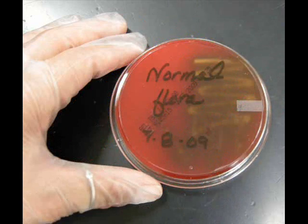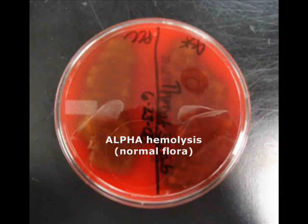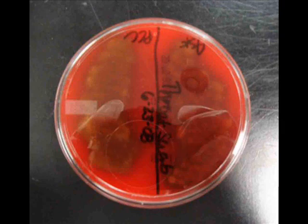Now here's a different blood agar plate that has bacterial growth, and when I look at the bottom of this plate the medium looks bruised — it has a brownish appearance to it. Here's another blood agar plate with the same type of hemolytic reaction. The samples plated on this blood agar were throat samples from two different lab partners and both show alpha hemolysis, that brown bruising color. This indicates normal flora.